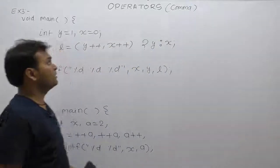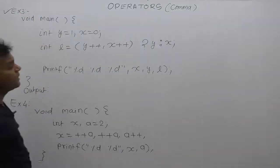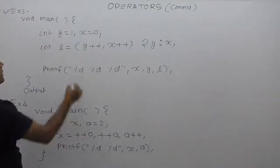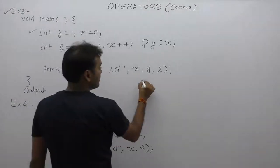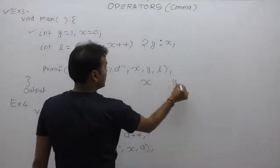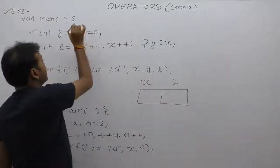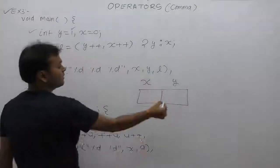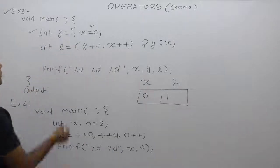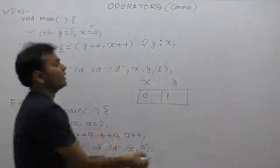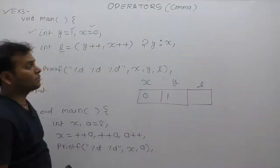Other examples are related to comma operators. In Example 3, we are declaring two variables x and y. The initial value of y is 1 and x is initialized by 0. Next, one more variable l is declared — so there are three variable declarations in total.